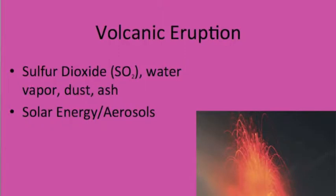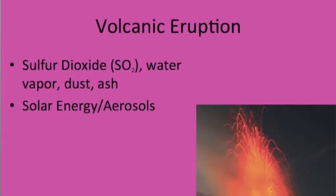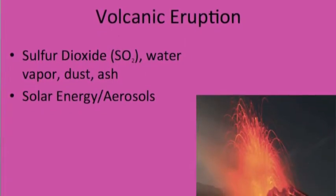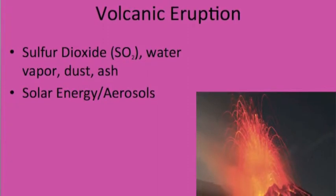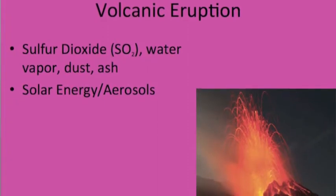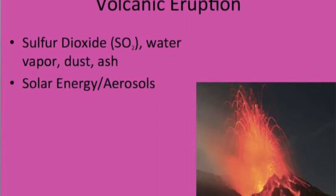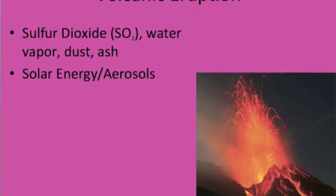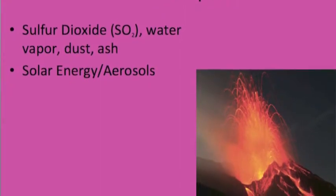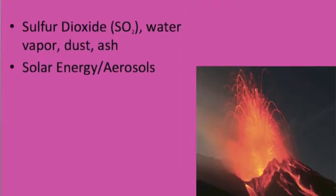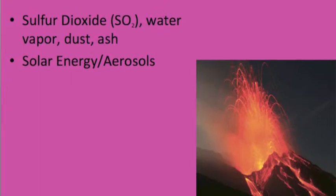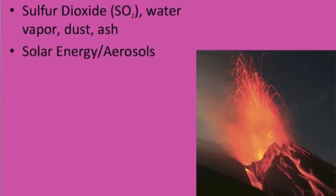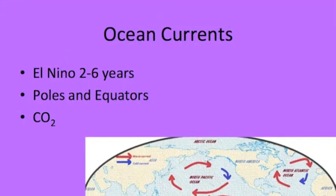On our next slide, we are talking about volcanic eruptions. They release large volumes of sulfur dioxide, water vapor, dust, and ash that are thrown into our atmosphere when volcanoes erupt. Aerosols are tiny particles that are produced by volcanoes. They reflect solar energy, which has a cooling effect on the Earth.